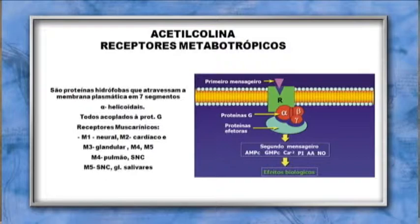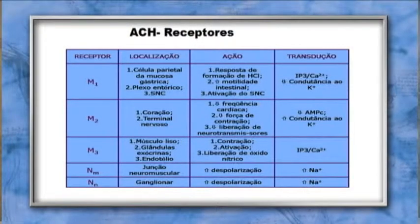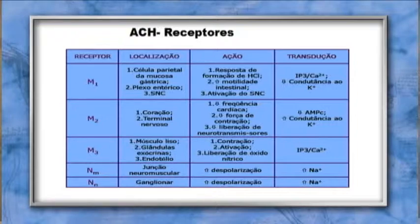Os receptores muscarínicos são: M1 (neural), M2 (cardíaco), M3 (glandular), M4 (pulmão e sistema nervoso central) e M5 (sistema nervoso central e glândulas salivares). A ação da acetilcolina nos receptores pode ser excitatória, gerando potencial pós-sináptico excitatório — exemplo: receptores nicotínicos na junção neuromuscular e no sistema ganglionar. Os receptores M1, M2 e M3 estão em localizações diferentes, ligados à proteína G, sendo receptores metabotrópicos.